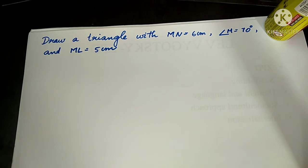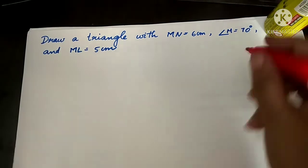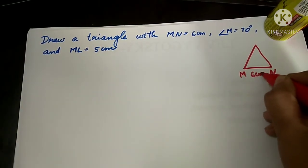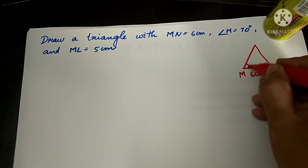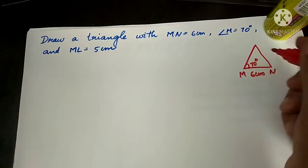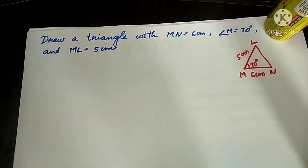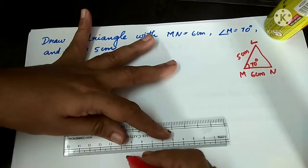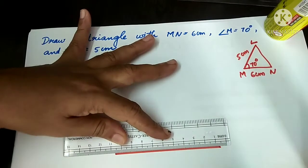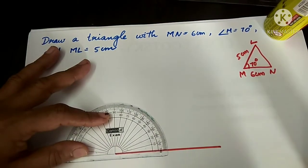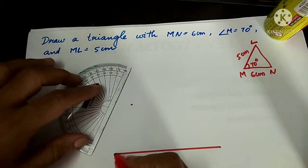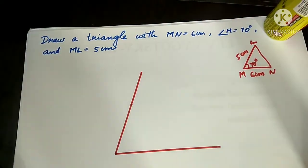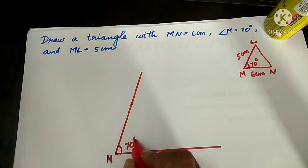Another example: draw a triangle MNL with MN equal to 6 cm, angle M equal to 70 degrees and ML equal to 5 cm. Let's draw a rough figure. MN is 6 cm, angle M is 70 degrees and ML is 5 cm. To draw this figure, first we have to draw a 70 degree angle. Using the scale, I draw a straight line, and by keeping the protractor at one end, I mark 70 degrees. So we get angle M as 70 degrees.